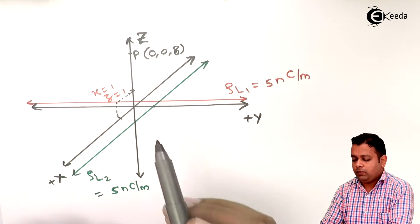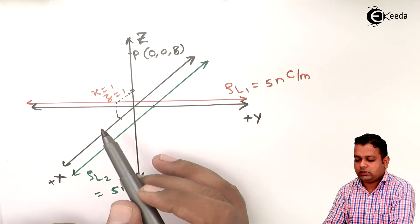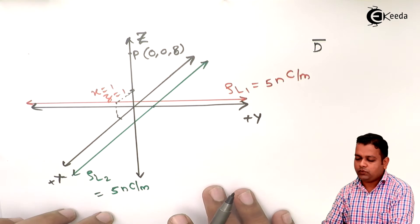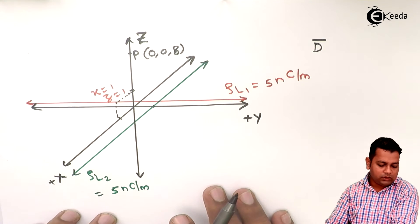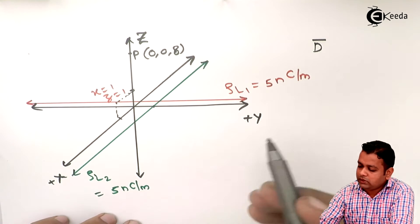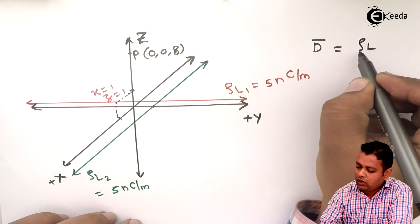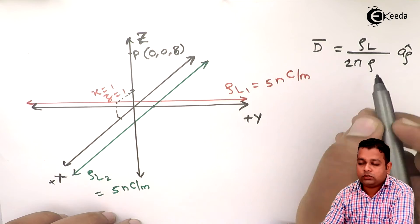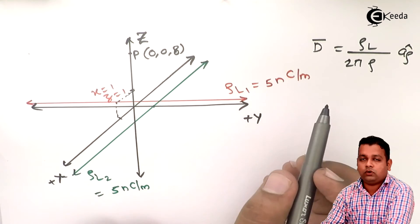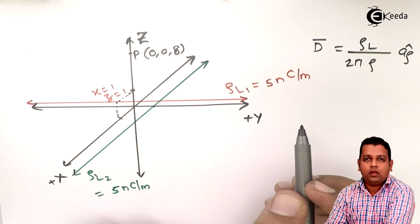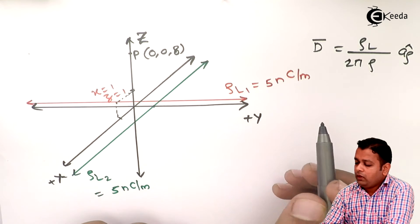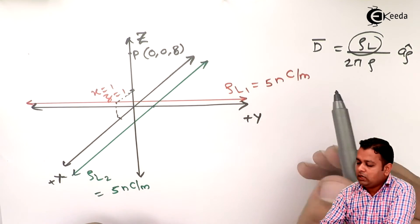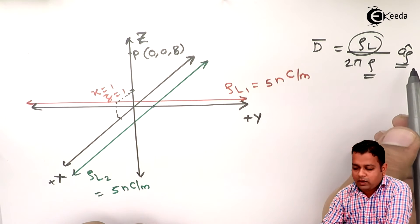So now because of these two sources at this field point, we are asked to find out D bar. So let us proceed with the formula. D bar is given by, because of line charge, it will be ρL upon 2π rho a rho cap. There is no ε0, ε0 remains in the formula for capital E bar electric field intensity.